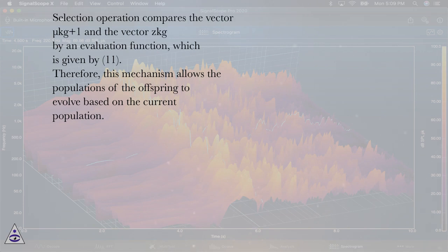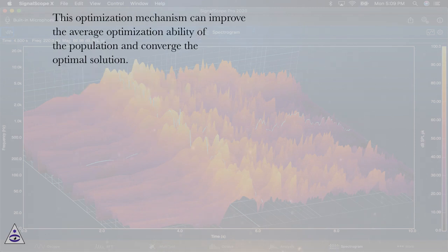Therefore, this mechanism allows the populations of the offspring to evolve based on the current population. This optimization mechanism can improve the average optimization ability of the population and converge the optimal solution.